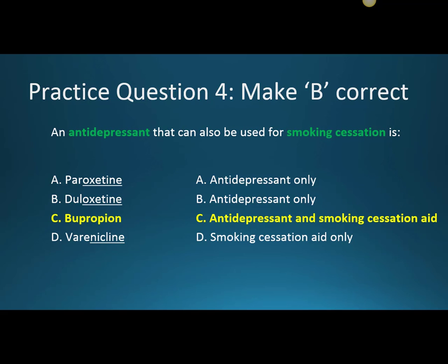Question four: An antidepressant that can also be used for smoking cessation is C, bupropion. Bupropion is both an antidepressant and a smoking cessation aid. A and B are incorrect because paroxetine and duloxetine are only indicated for depression. D, varenicline, is incorrect because it is only used for smoking cessation and is not an antidepressant.